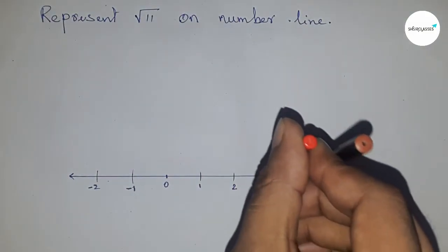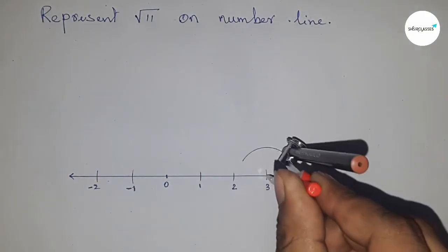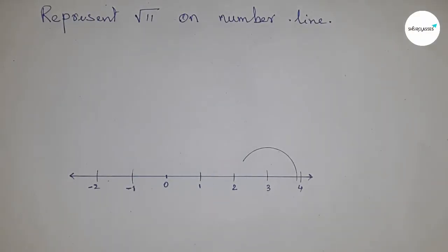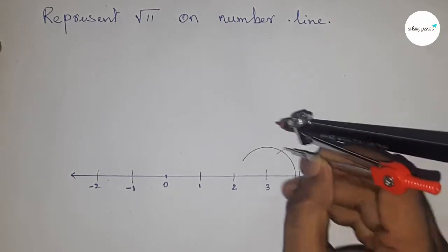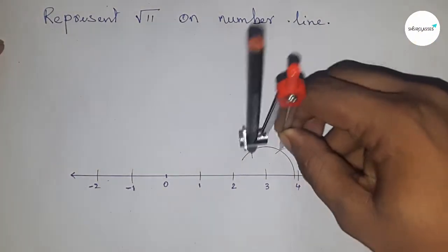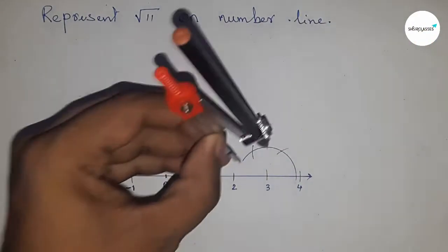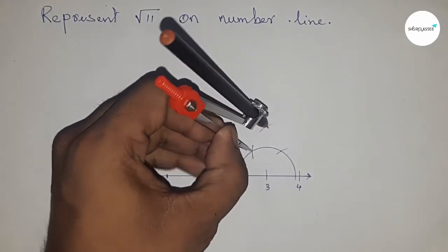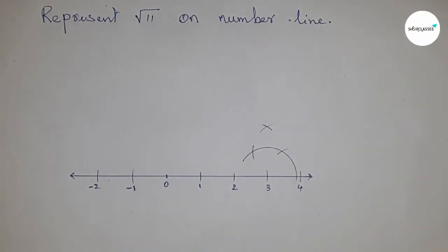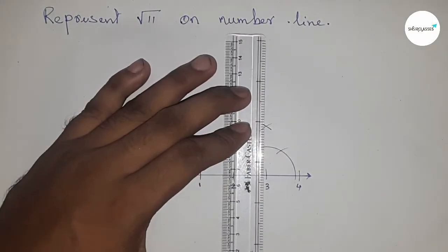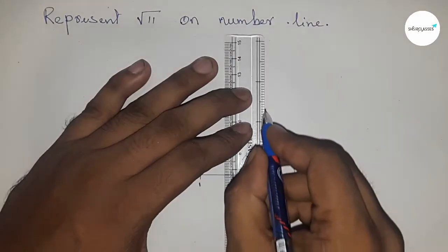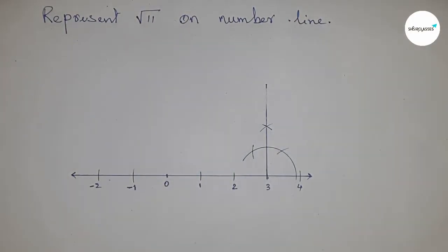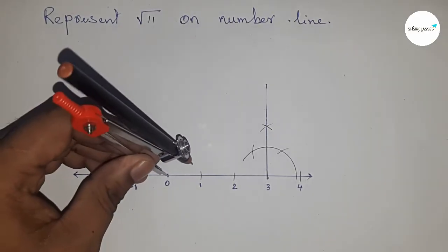First, construct a 90-degree angle at point 3 on the number line. Next, take the length between any two numbers.